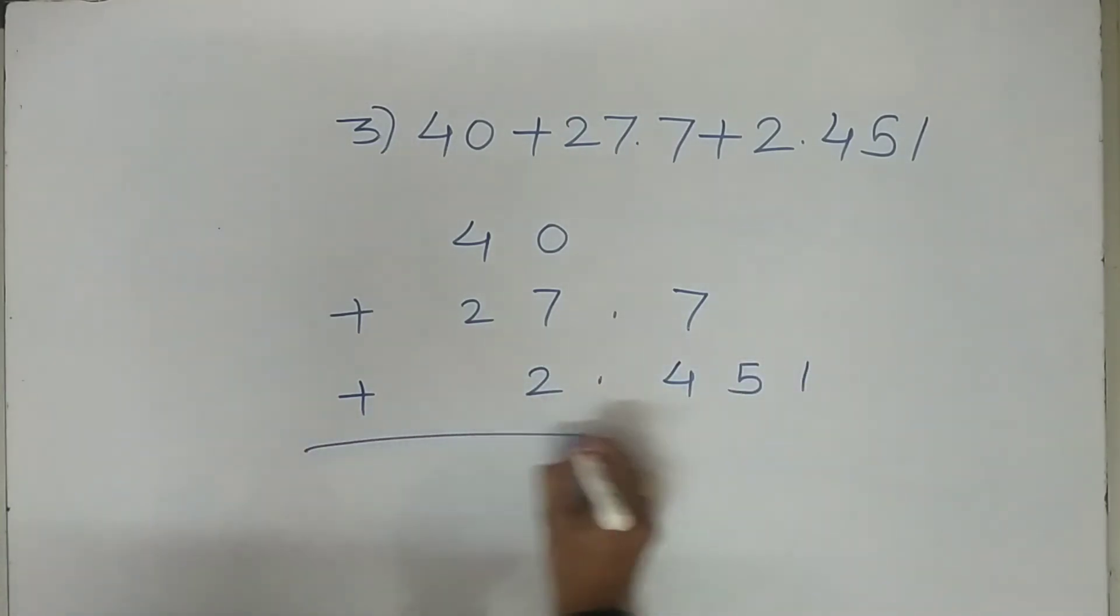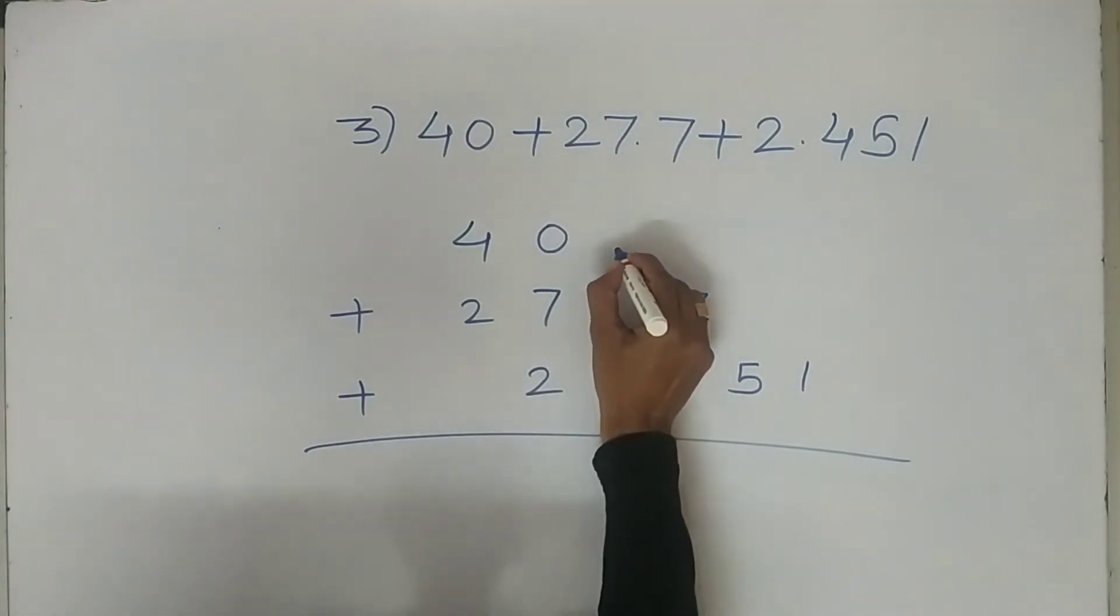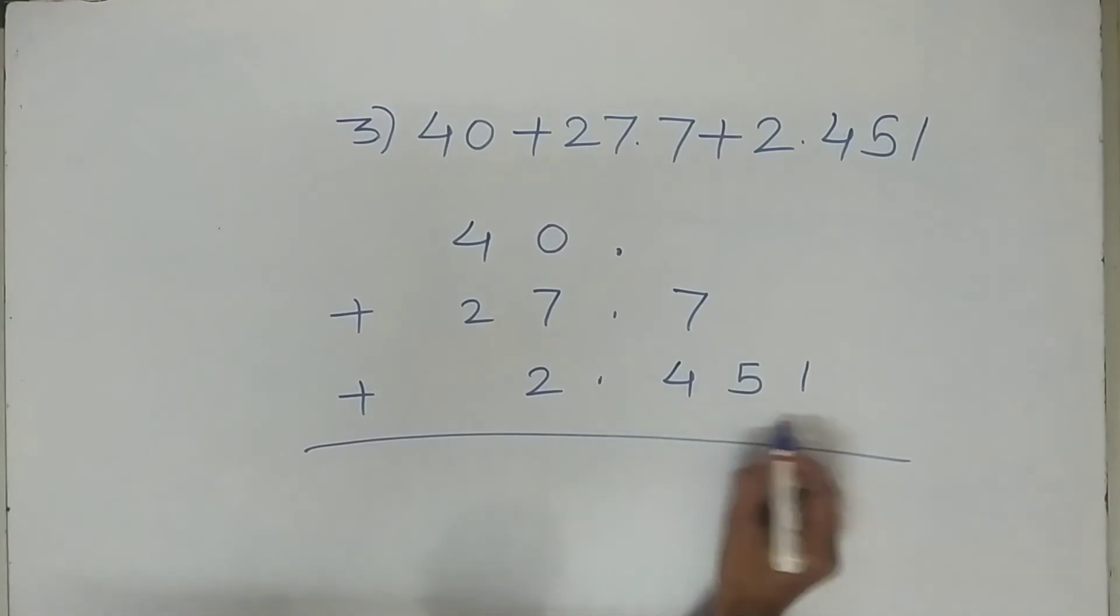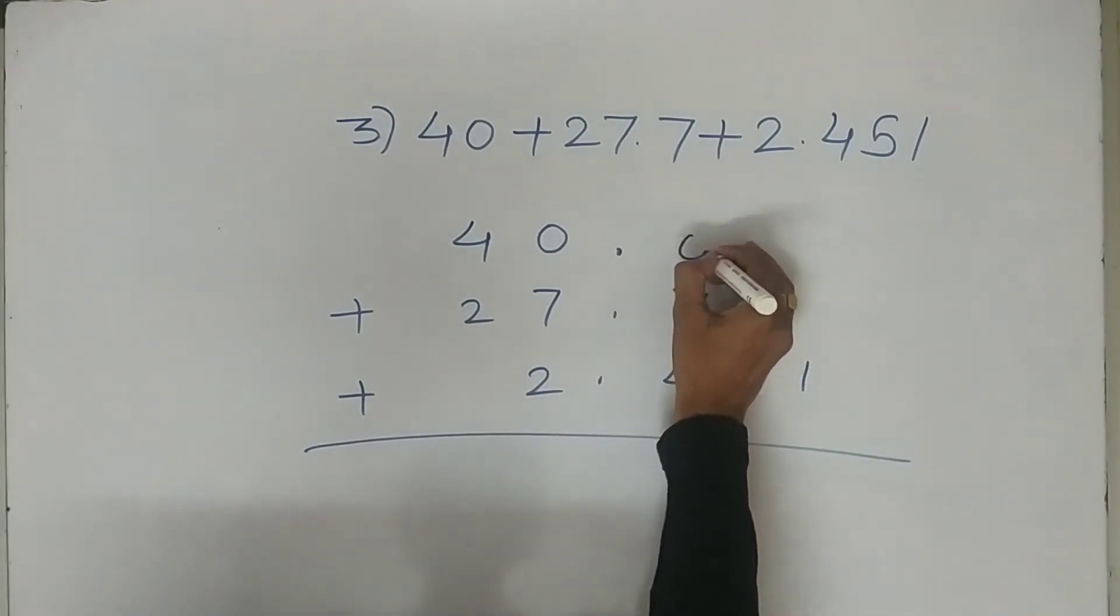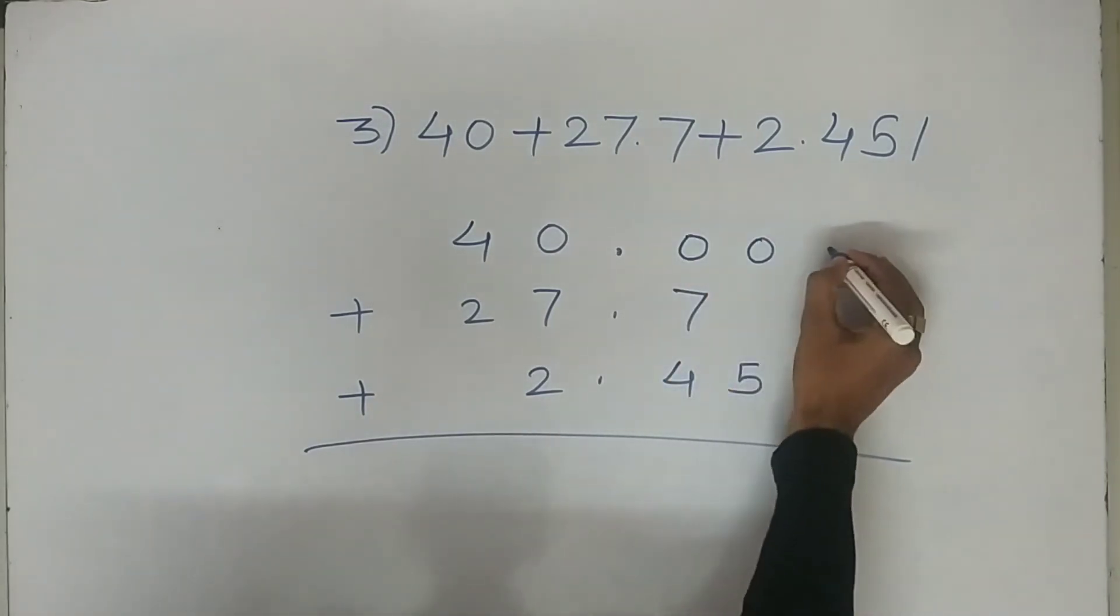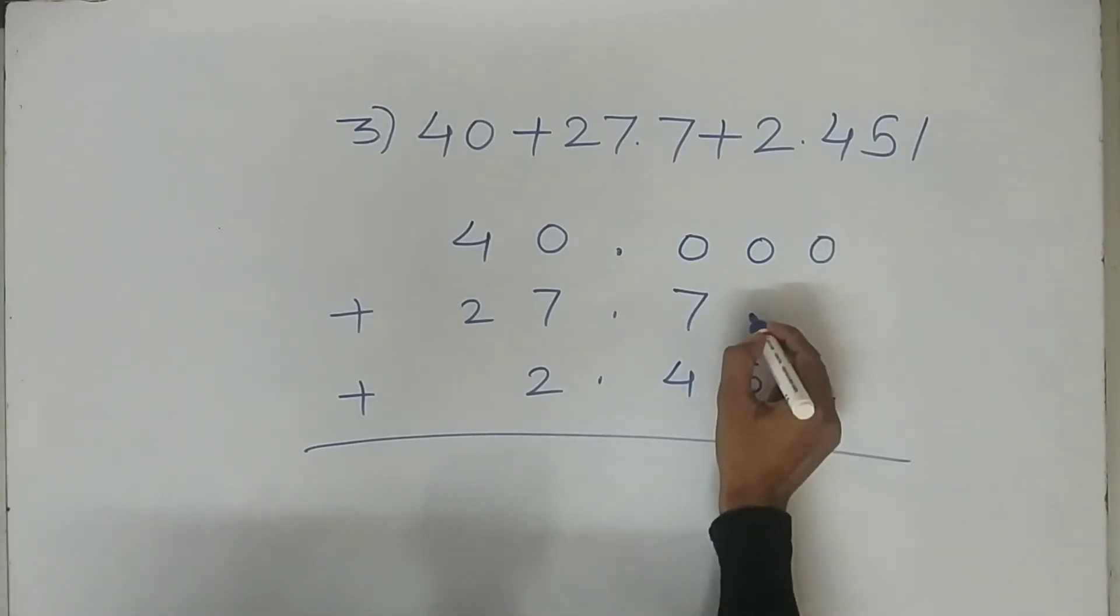If there's no decimal point, we will write zeros to match the decimal places. Write zero here, and zero here.